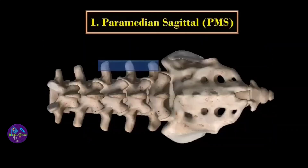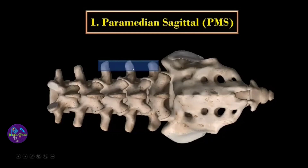Coming to the paramedian sagittal approach, we place the probe just over the transverse processes of the L3, L4, and L5 vertebrae. You can start scanning from the midline — identify the spinous process, then the lamina, then the articular process, and then the transverse process, just as you do while scanning for neuraxial blocks.